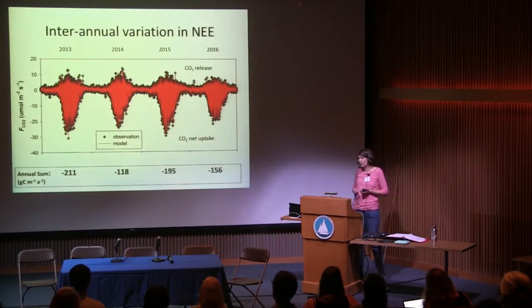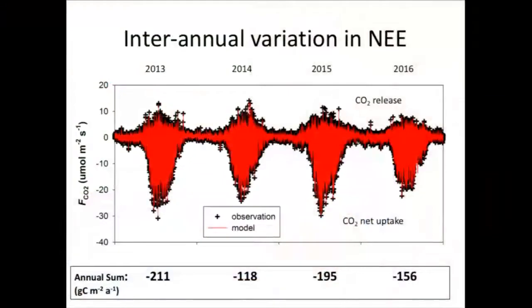At Plum Island, we now have four years of measurements. NEE stands for net ecosystem exchange of CO2 — essentially the CO2 flux. Positive fluxes are respiration fluxes, a release of CO2 into the atmosphere; negative fluxes indicate net uptake by the ecosystem. We see strong seasonality, with large fluxes during summertime and small but detectable fluxes during the non-growing season. There's also variation between years — two years were more productive than the other two.